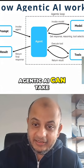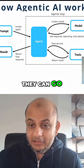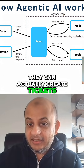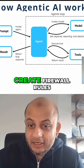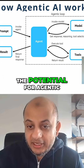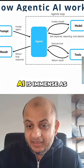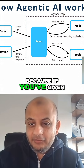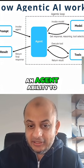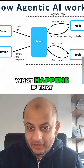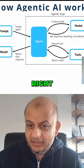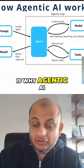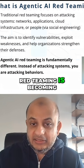Agentic AI can take action within your environment. They can go query systems. They can actually create tickets. They can create firewall rules. The potential for agentic AI is immense — as are the security risks — because if you've given an agent the ability to do something, what happens if that agent gets compromised? This is how agentic AI works and this is why agentic AI red teaming is becoming so in demand.